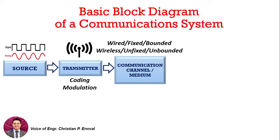The signal is then transmitted over the communications channel, also called the transmission media or communications medium. For the transmitter, it can use an antenna if it's using wireless communications. We have two general types of communication systems: wired and wireless. Wired is also termed as fixed or bounded, whereas wireless is termed as unfixed or unbounded. For wired communications, we use cables, copper wires, or fiber optic cables. For wireless, we use an antenna, which utilizes the air and electromagnetic waves.